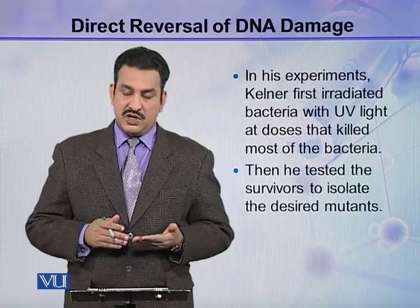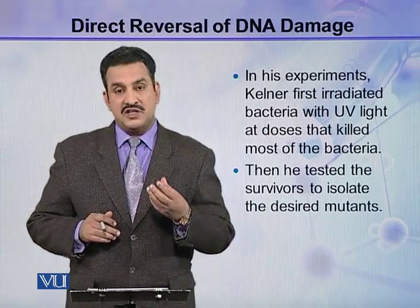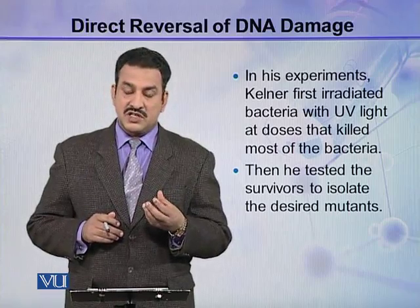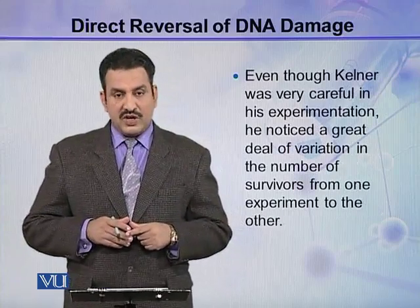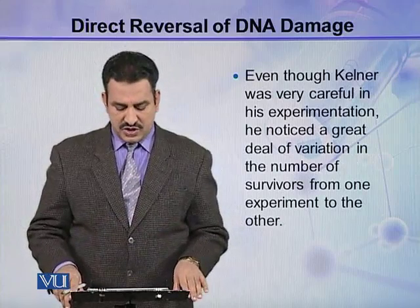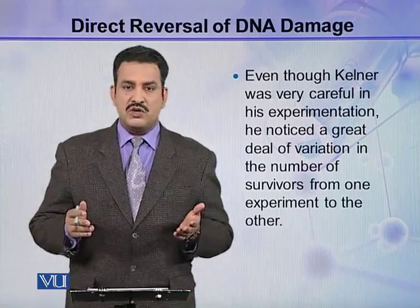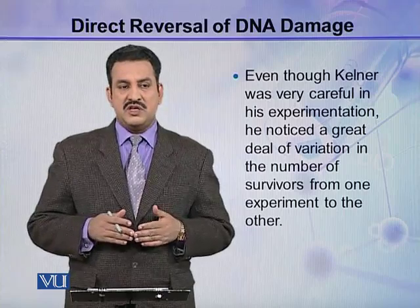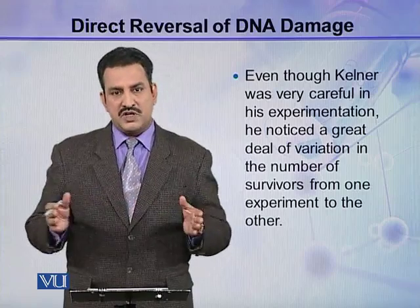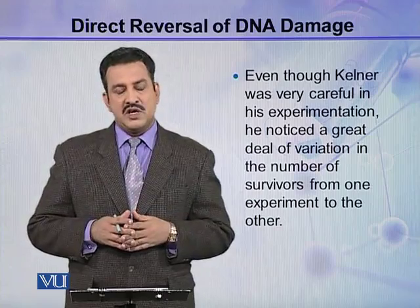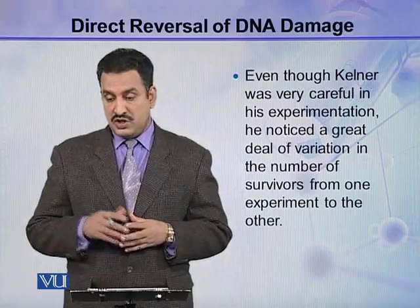After that exposure, he was expecting most of the bacteria to be killed. He found some survivors and tested those survivors so that he might get some desired mutants, because he was working to get mutants. Even though Kellner was very careful in his experimentation, he noticed a great deal of variation in the number of survivors from one experiment to the other. When performing experiments, one expects the same results in different batches — there must be correlation between experiments. But he was surprised to see such great variation in survivor numbers.